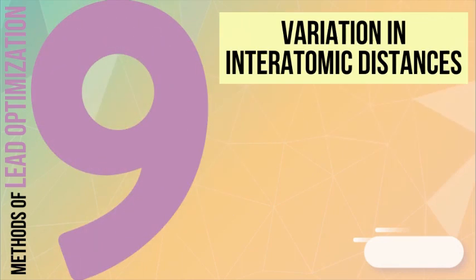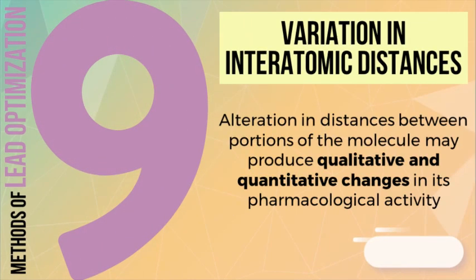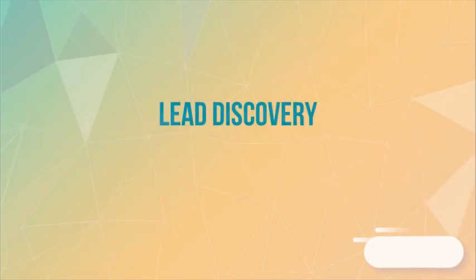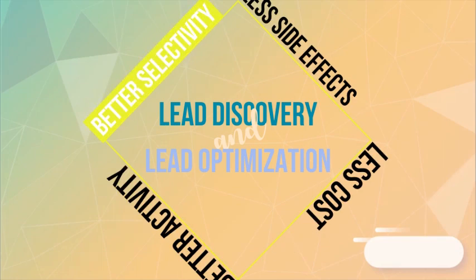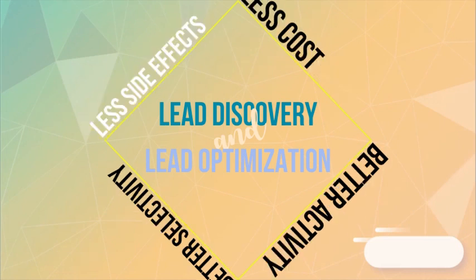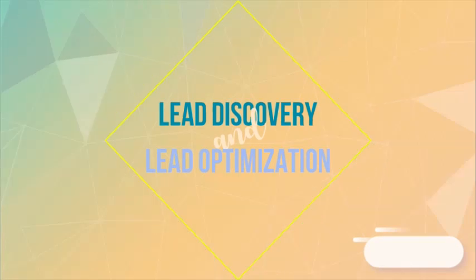And finally, the distances between portions of the lead molecule, whether these portions are part of a pharmacophore or not, may also be altered to produce changes in the pharmacologic activity of the compound. In summary, the goals of lead discovery and lead optimization are to improve the activity and selectivity of the lead compound and to minimize, and if possible eliminate, its side effects through modifications that will maximize its interaction with its target binding site. Another goal of drug discovery is to be able to produce the drug cheaply and efficiently. Lead discovery and optimization is an invaluable tool that provides the researcher with the information needed to select the lead with the greatest potential to be developed into a safe and effective medicine.